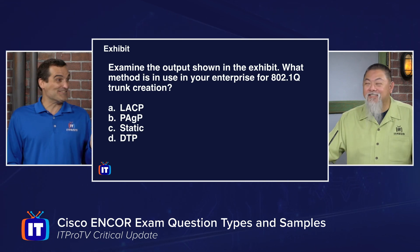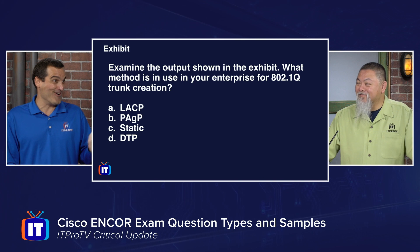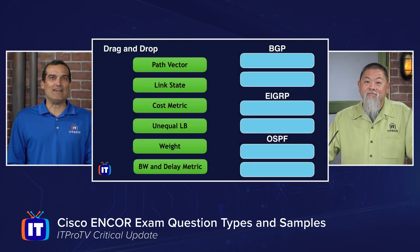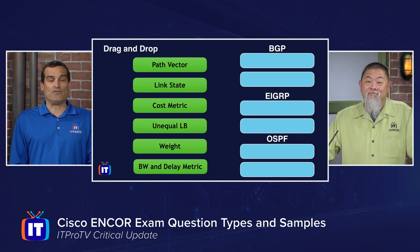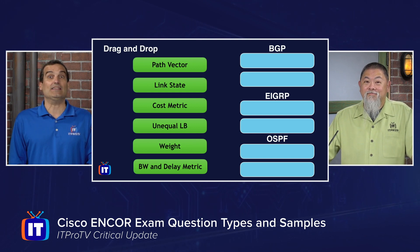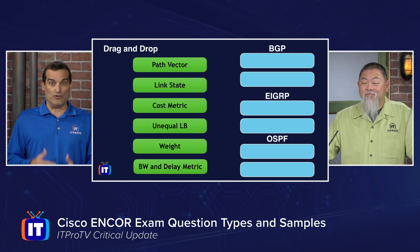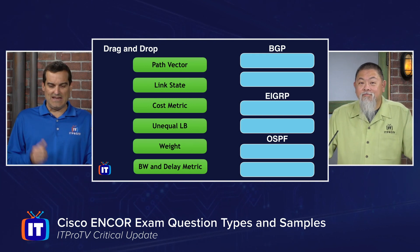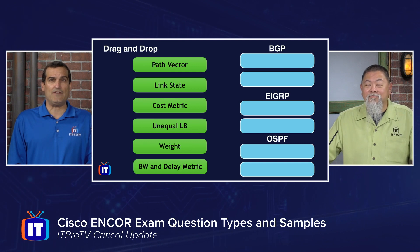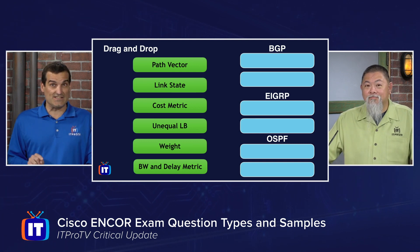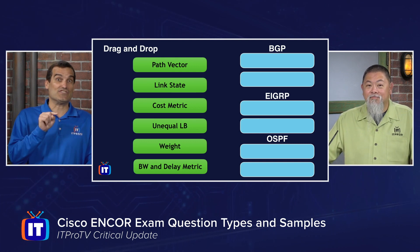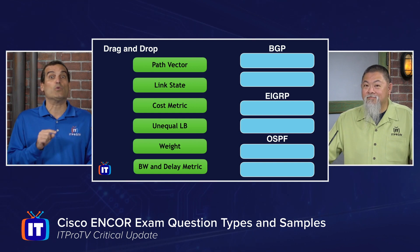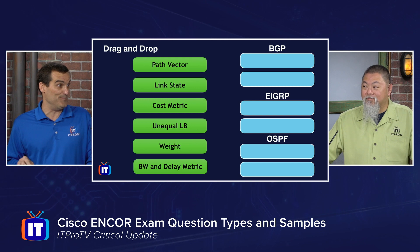That screenshot was actually from the class on troubleshooting trunks. Finally, the last question type you can expect is drag and drop. In this example, there are three routing protocols — BGP, EIGRP, and OSPF — and six slots on the right with six components on the left, which tells us right away that every component will be used.